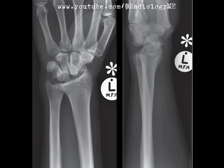Let's dive into this wrist case. Looking at the dorsi-palmar and lateral radiographs of the left wrist, the first thing that stands out is the alignment of the lunate. You'll notice that the lunate itself is sitting normally in relation to the radius. However, if we shift our attention to the capitate, there's something we don't like — it's been displaced dorsally.